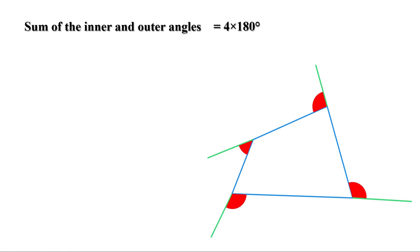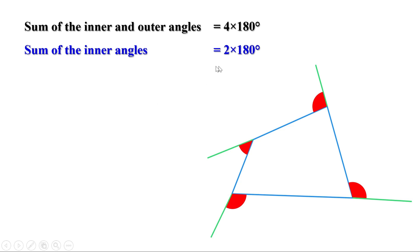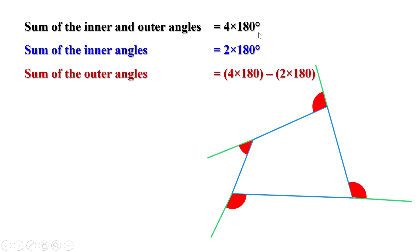The sum of the inner angles of a polygon is (n − 2) × 180. Here n = 4, so the sum of inner angles is (4 − 2) × 180 = 2 × 180. To find the sum of outer angles, we subtract: sum of outer angles = 4 × 180 − 2 × 180 = 2 × 180 = 360 degrees.